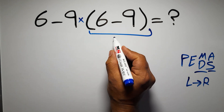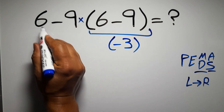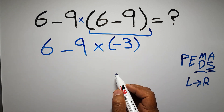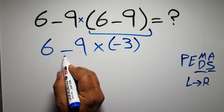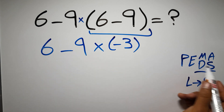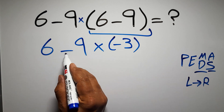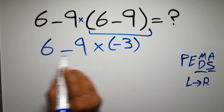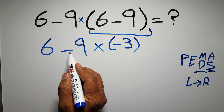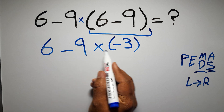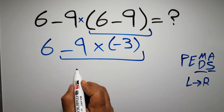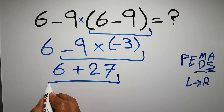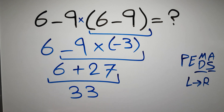Six minus nine gives us negative three, so we have six minus nine times negative three. In this expression we have one subtraction and one multiplication. According to the order of operations, multiplication has higher priority than subtraction, so first we have to do this multiplication, then this subtraction. Negative nine times negative three gives us positive 27, so we have six plus 27 which equals 33.